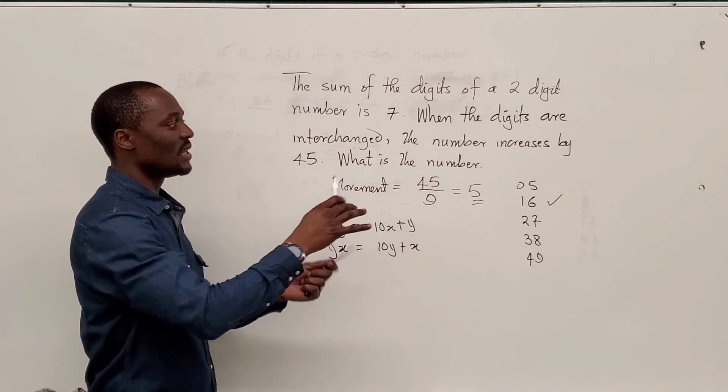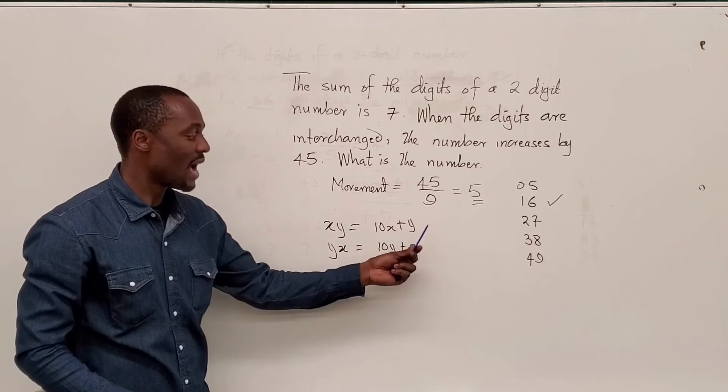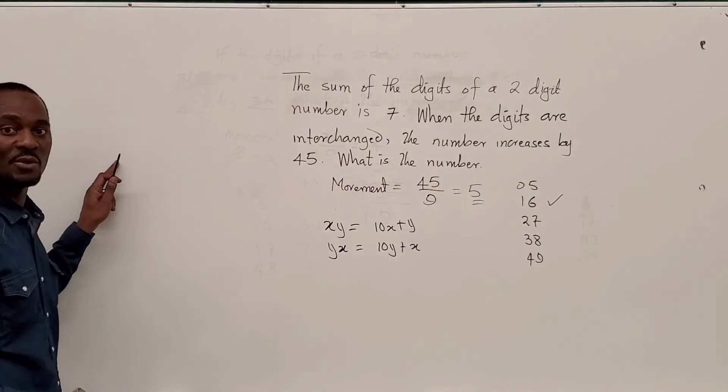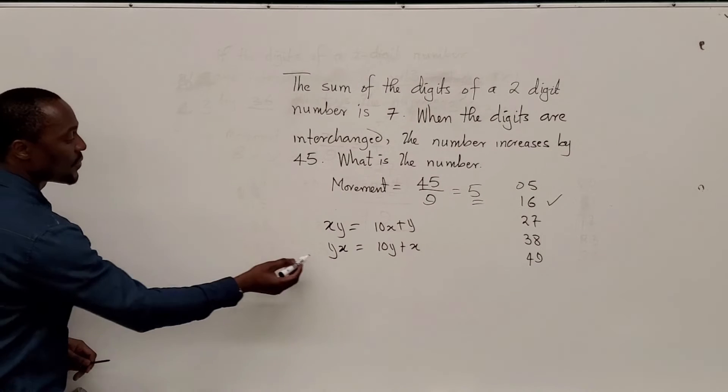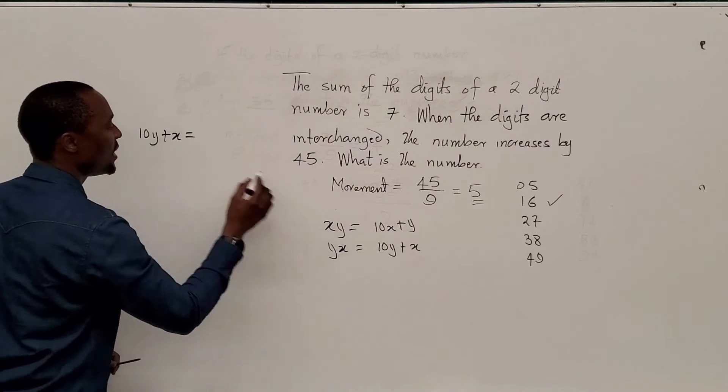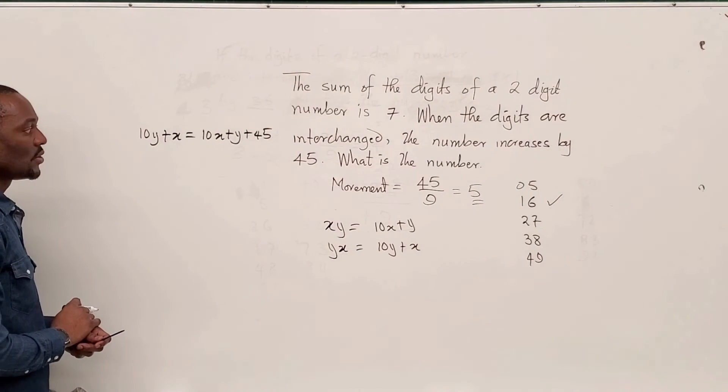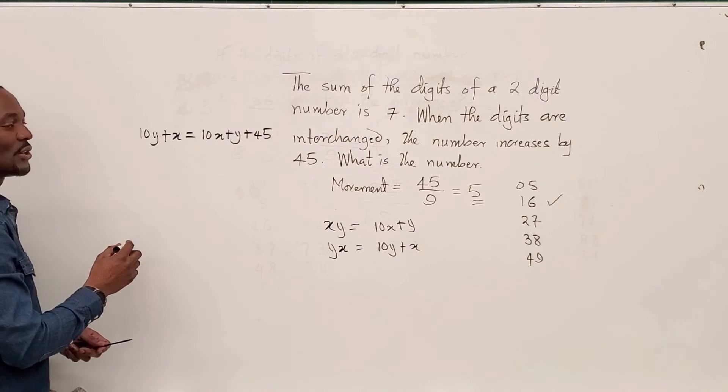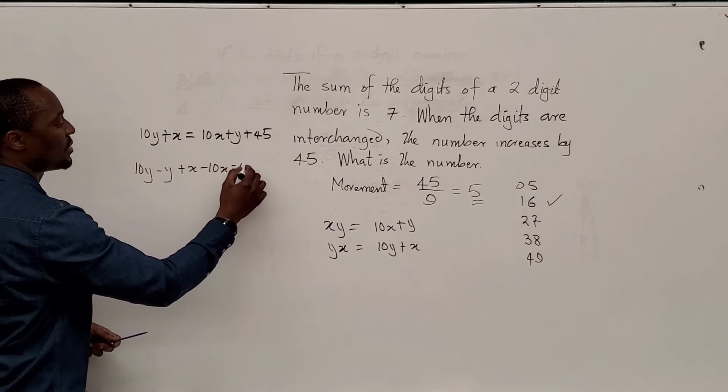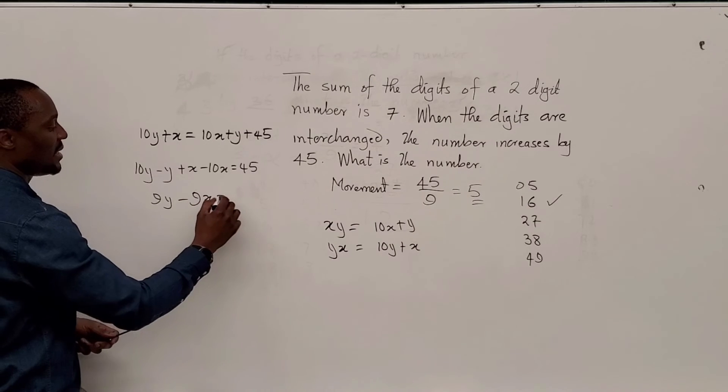But remember, we were told that when the digits are switched, the number increases by 45. It means for you to get this, you must have added 45 to this. You have to add 45 to this to get this. So you can make an equation out of that. And the equation is going to look like this. This equation, 10Y plus X will be equal to the original equation, 10X plus Y plus 45. So let's move all of these down here. So you end up with 10Y minus Y plus X minus 10X equals 45. This will give you 9Y minus 9X equals 45.